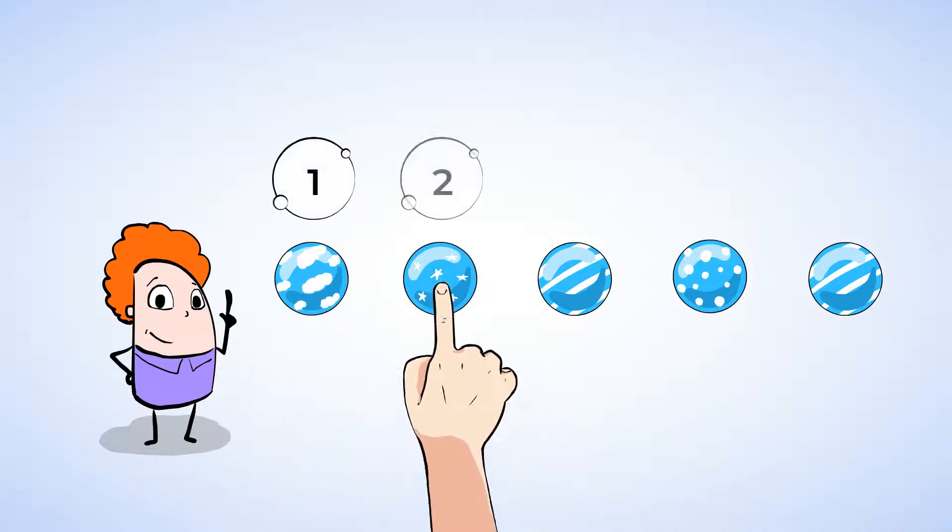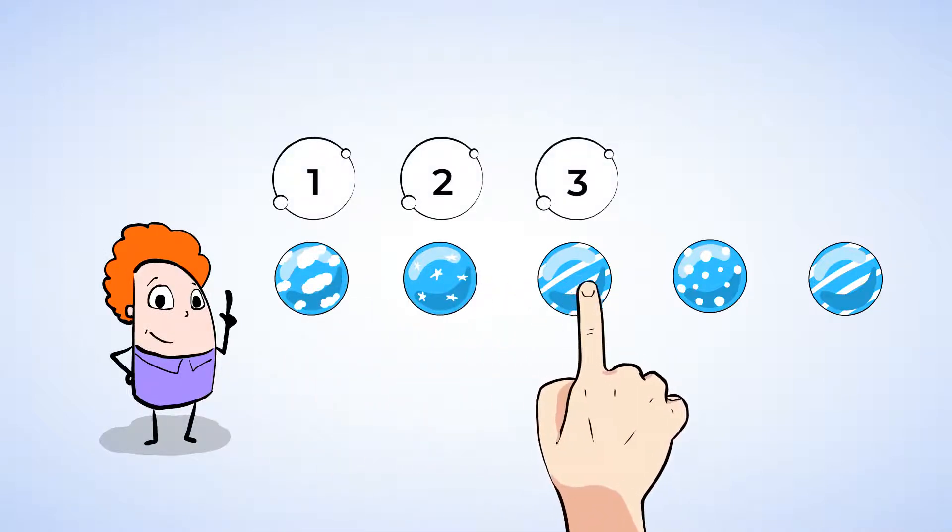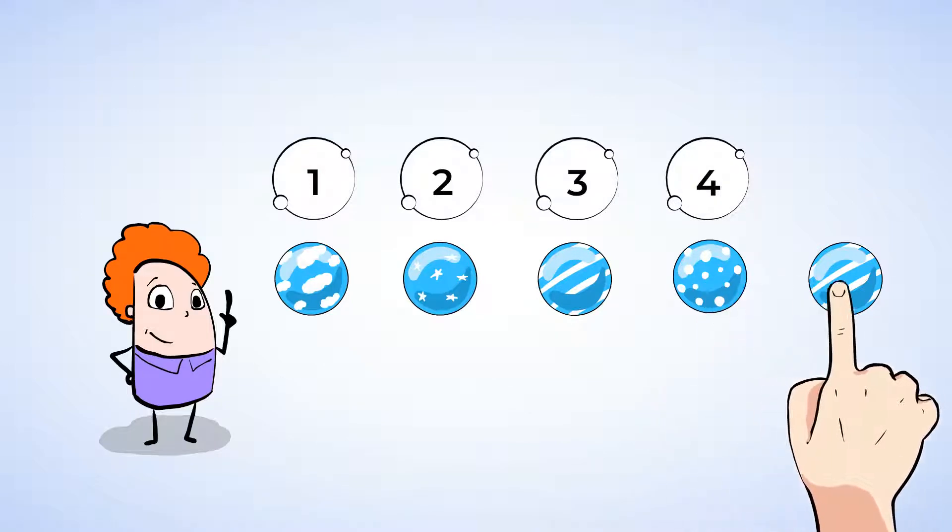One, two, three, four, five. There are five marbles. We counted each marble and five was the last number we counted. So there are five blue marbles.